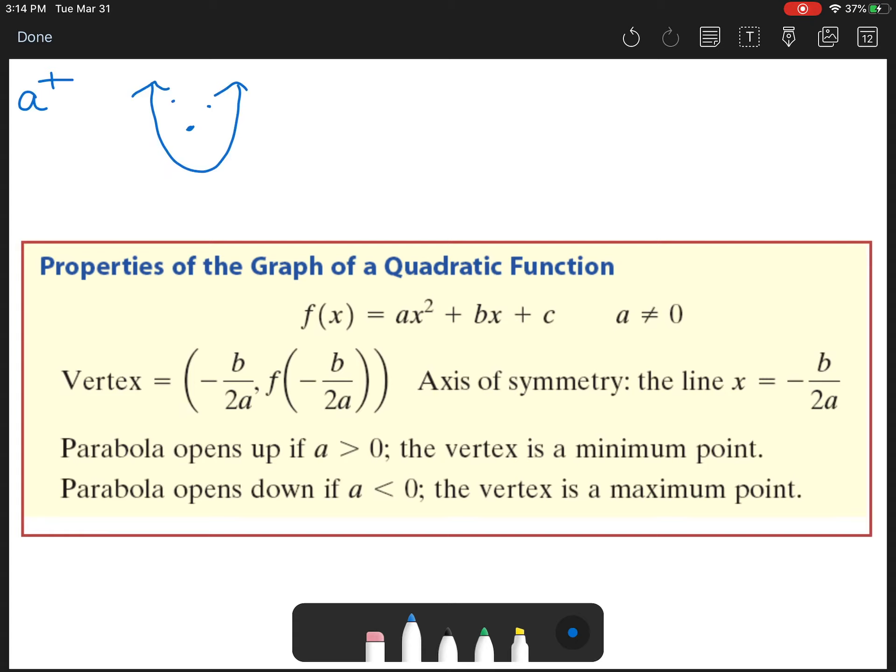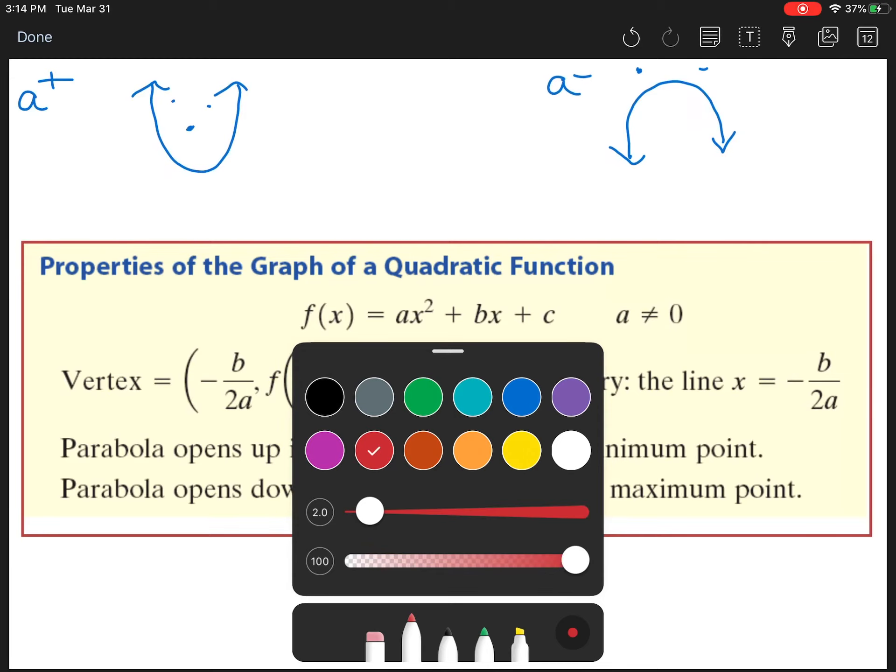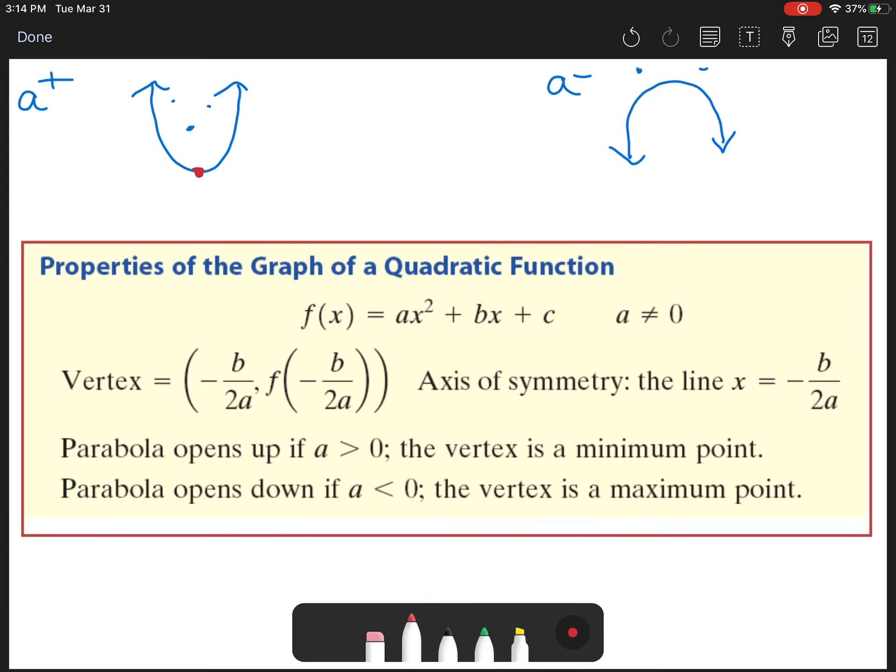All right. Now, if a is negative, if a is negative, then your parabola is going to open down. Negative people usually have that down looking face. Now, here's a little kicker. The highest or lowest point on the graph of a quadratic is known as the vertex. So, if a is positive, the vertex would be at a minimum location. If a is negative, the vertex would be at the maximum location.